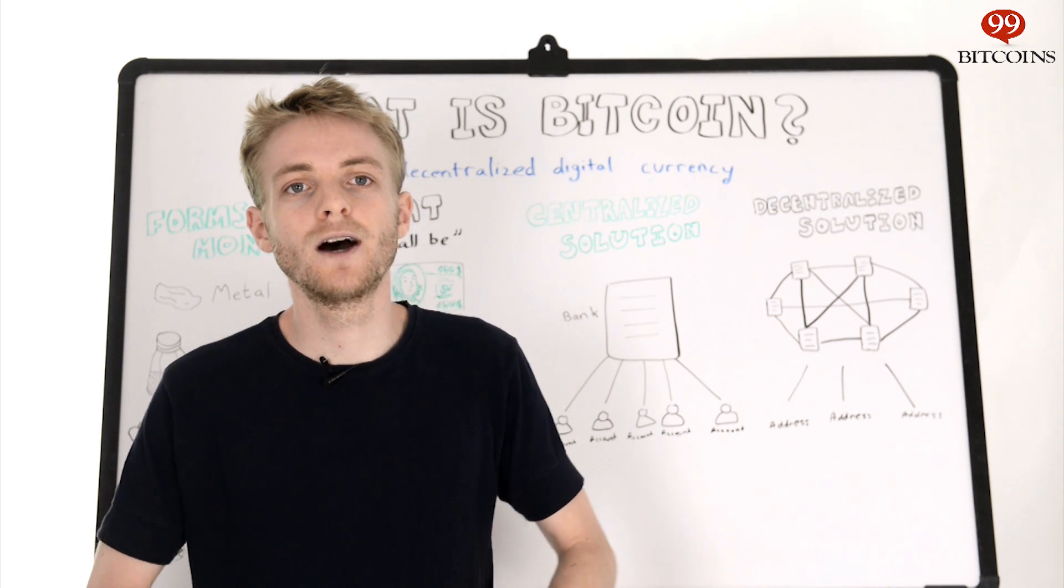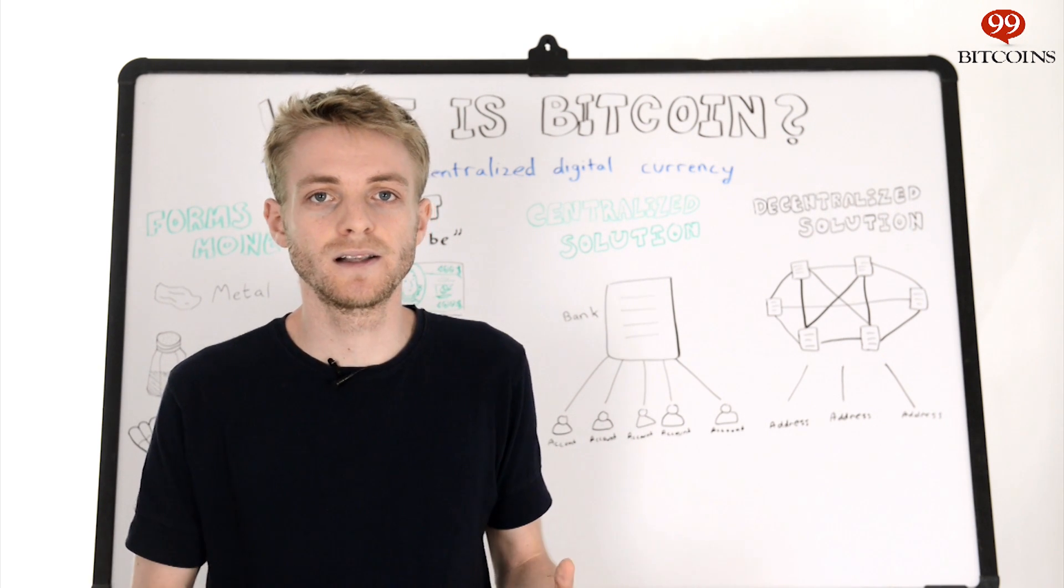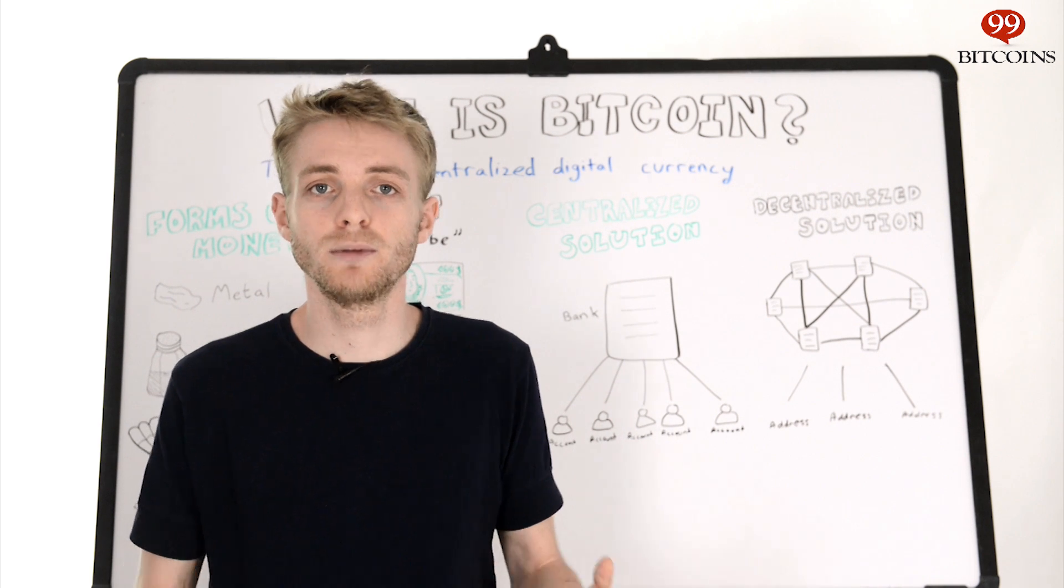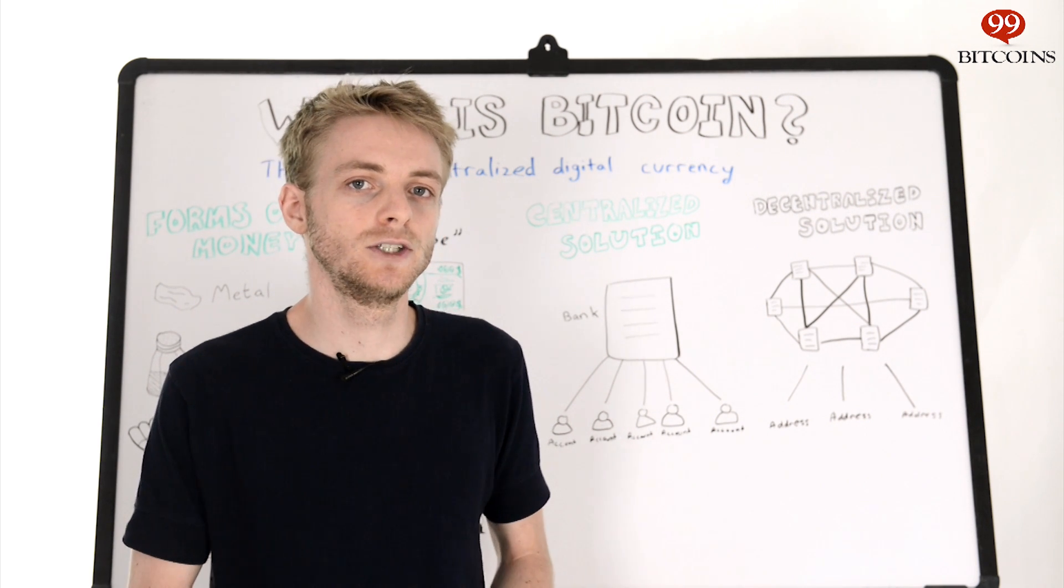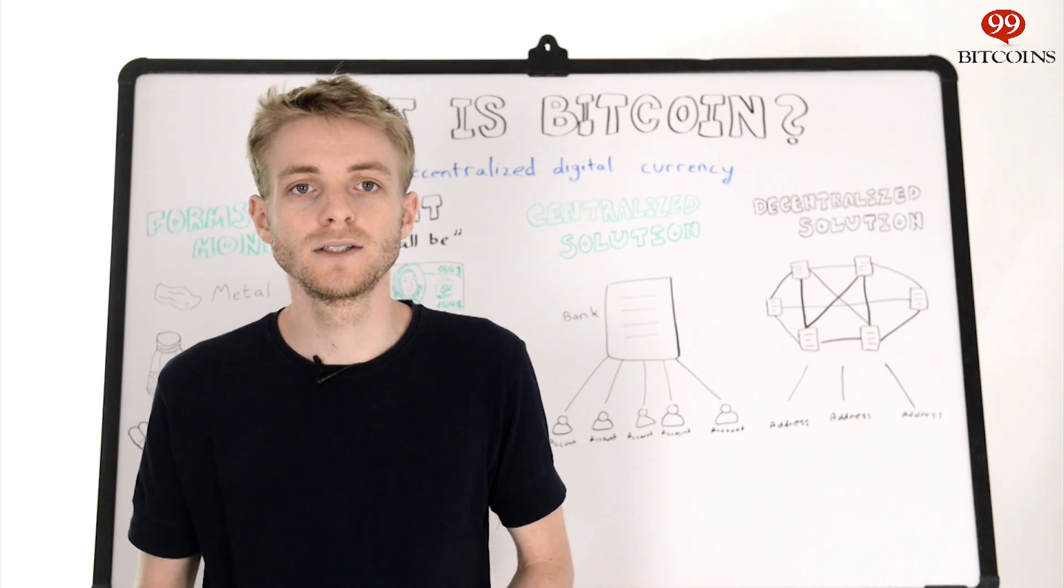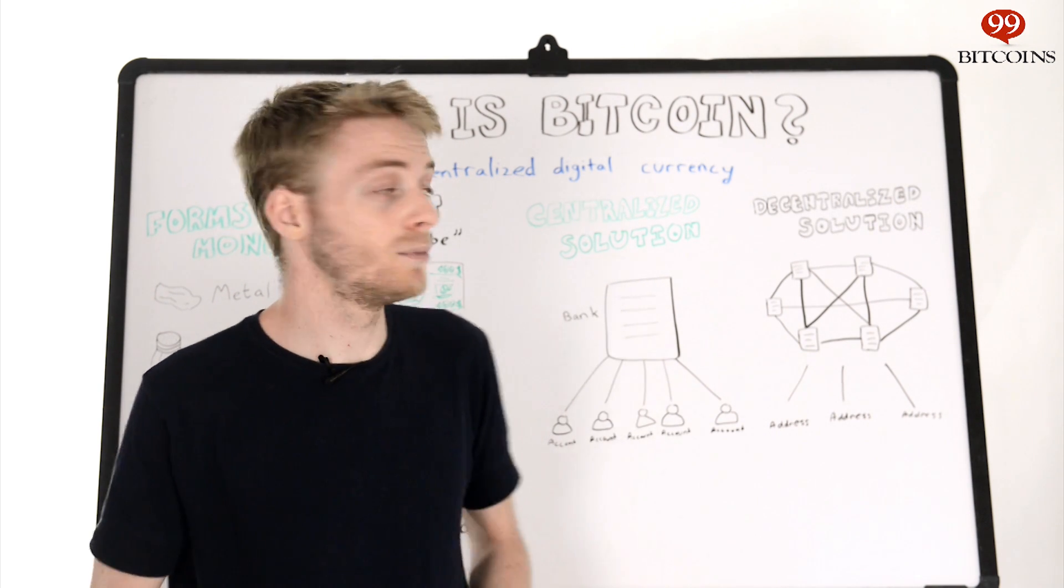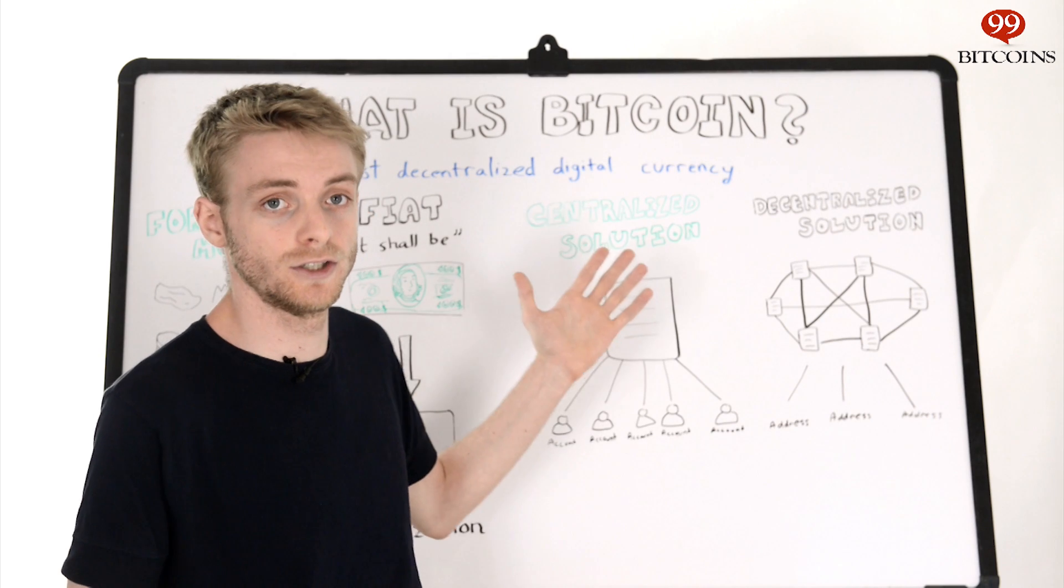In Bitcoin, the dictionary that helps everyone stay on the same page is the ledger and this ledger is called the blockchain. So now that we understand how Bitcoin is digital and how Bitcoin is decentralized, we can finally say confidently that Bitcoin is the first decentralized digital currency.